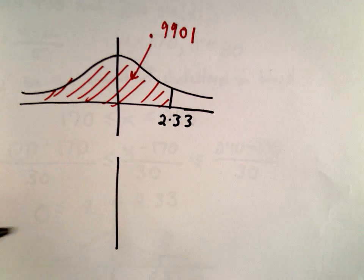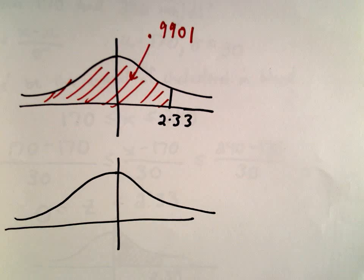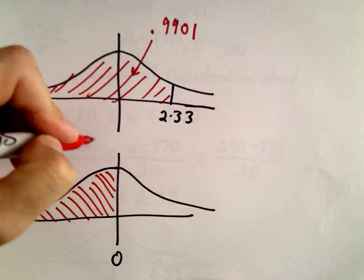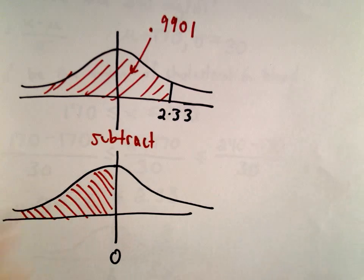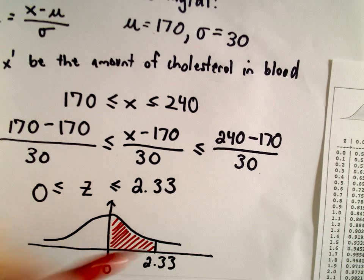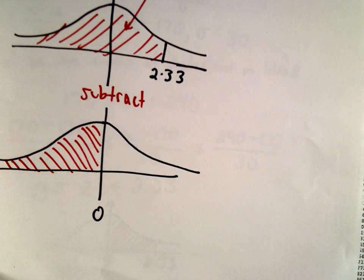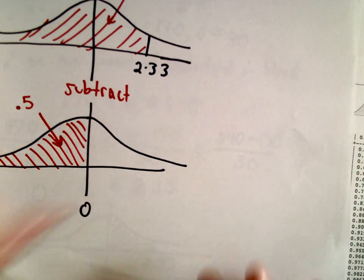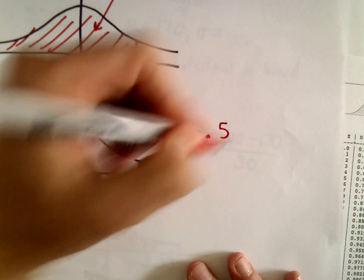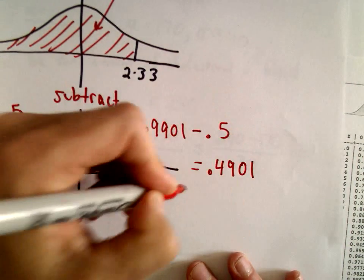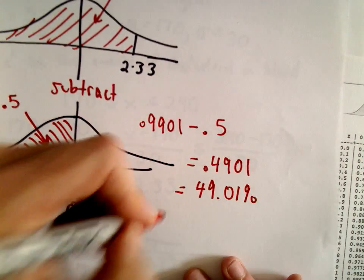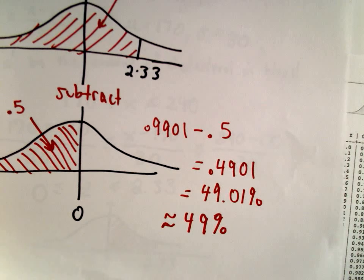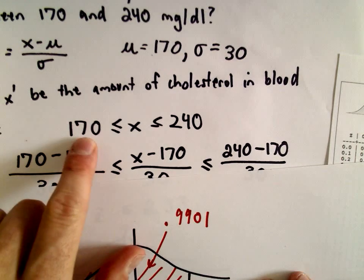We subtract off the area to the left of z equals 0. Taking the whole area of 0.9901 and subtracting the left area leaves just the region we're interested in. Since this is a standard normal distribution, the area to the left of z equals 0 is 0.5, so we get 0.9901 minus 0.5 equals 0.4901, which is 49.01%, or roughly 49%. So about 49% of 14-year-old boys have cholesterol levels between 170 and 240.